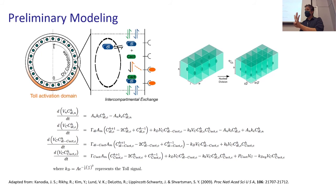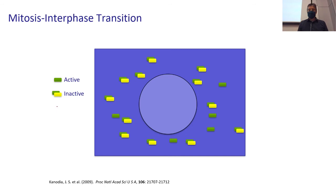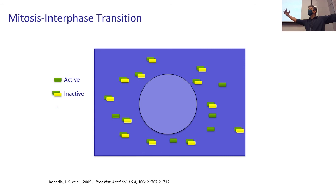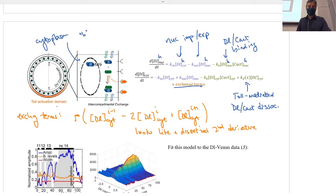At the mitosis-to-interphase transition, dorsal, dorsal-cactus complex in yellow, and cactus are in the cytoplasm. When nuclei form, dorsal can begin entering. The important consideration was how to model the initial nuclear concentration at this transition. The original model assumed nuclei reformed empty — meaning empty of dorsal — and then dorsal was allowed to enter afterward. This gave the initial nuclear dorsal concentration starting at zero at the beginning of each interphase.